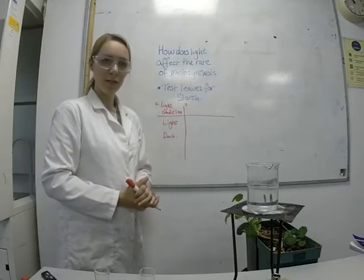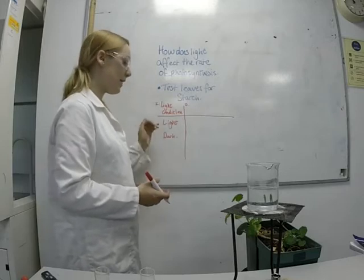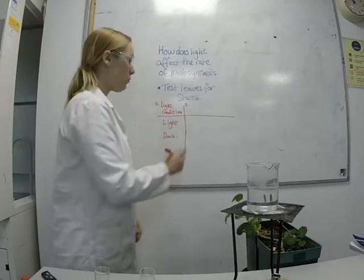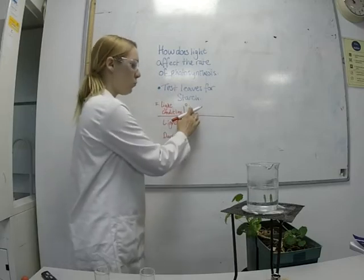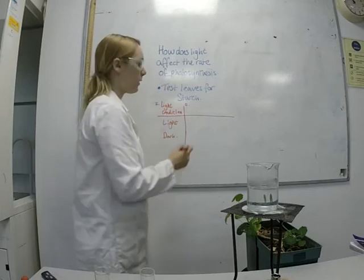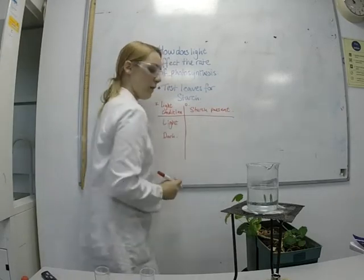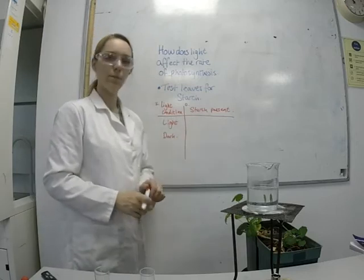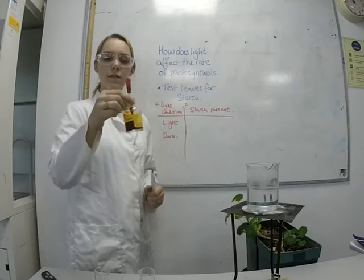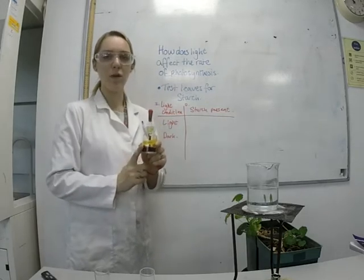The results we're going to take are whether starch is present in the leaf, depending on whether it's been kept in the light or in the dark. Whatever depends on the light condition is our dependent variable — so 'if starch is present', and I'll write yes or no depending on whether the colour goes black or stays orange. Iodine will turn black in the presence of starch.